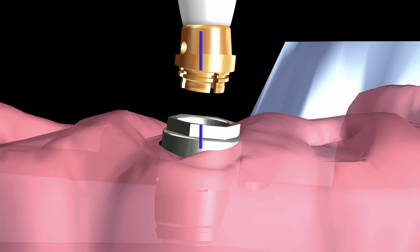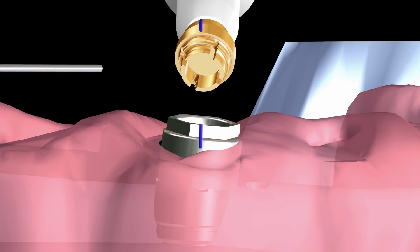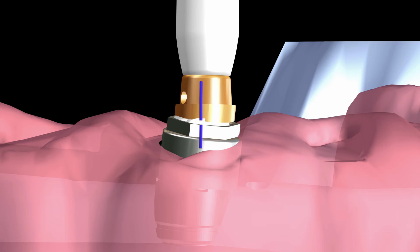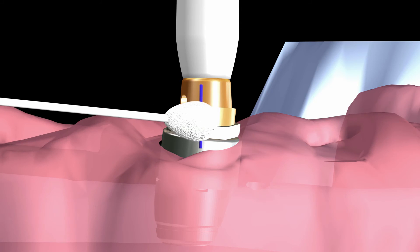The female is separated from the base. Resin cement is added to both parts, and the female is snapped firmly back into the base. Excess cement is removed.